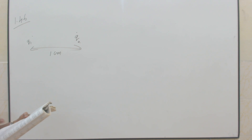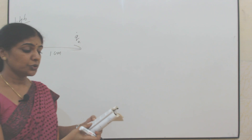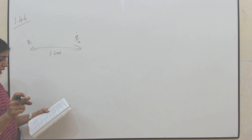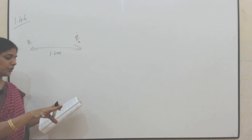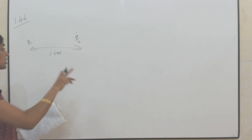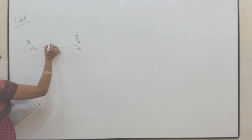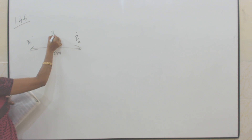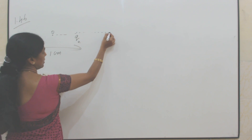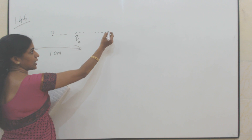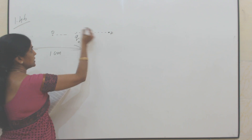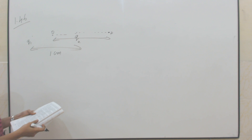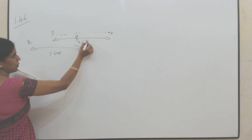We are going to calculate the electric field due to the dipole at a point on its axial line and also on its equatorial line from the center of the dipole. From the center, I have a point C on its axial line which is at a distance of 1 meter from the center of the dipole.